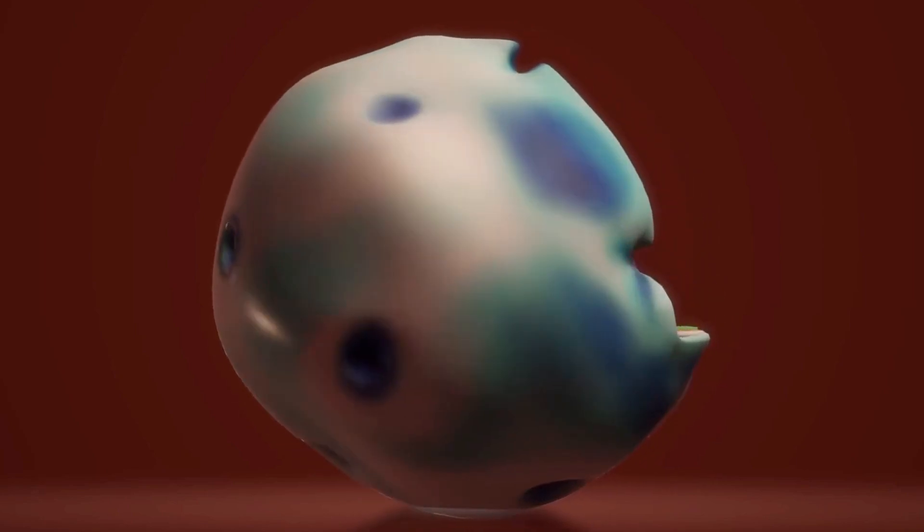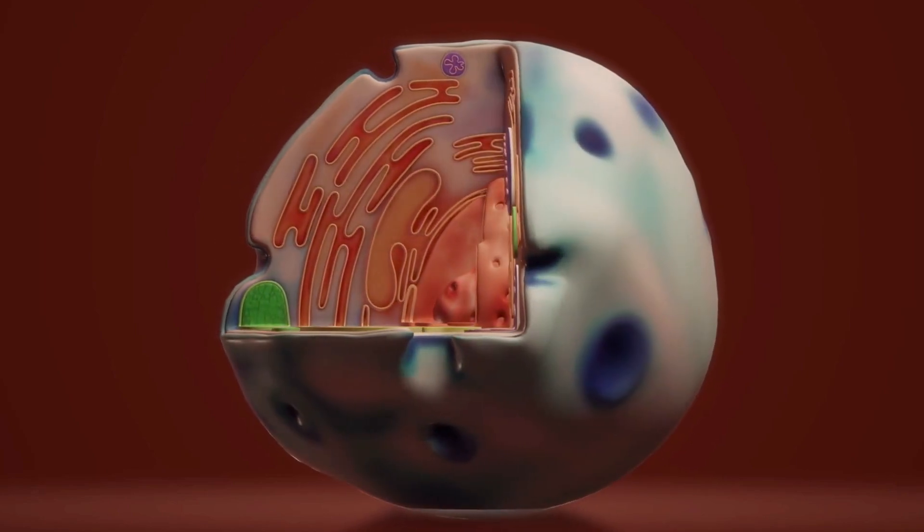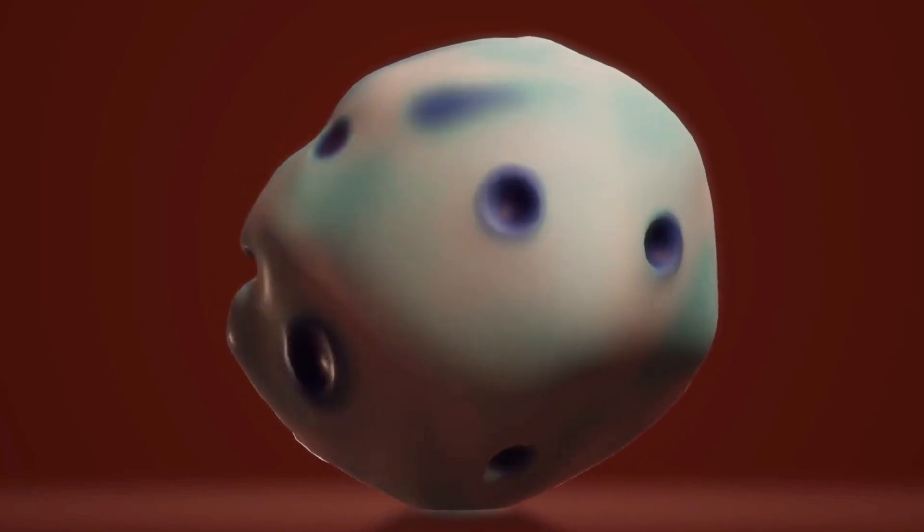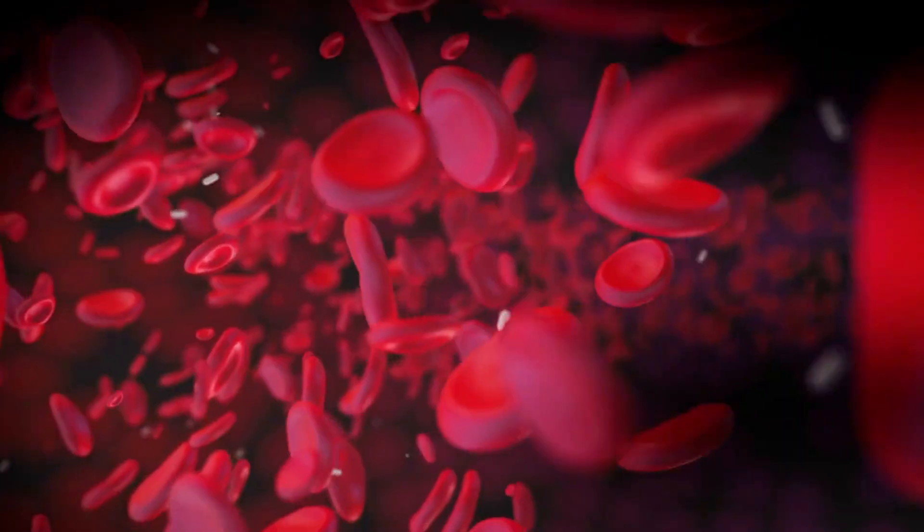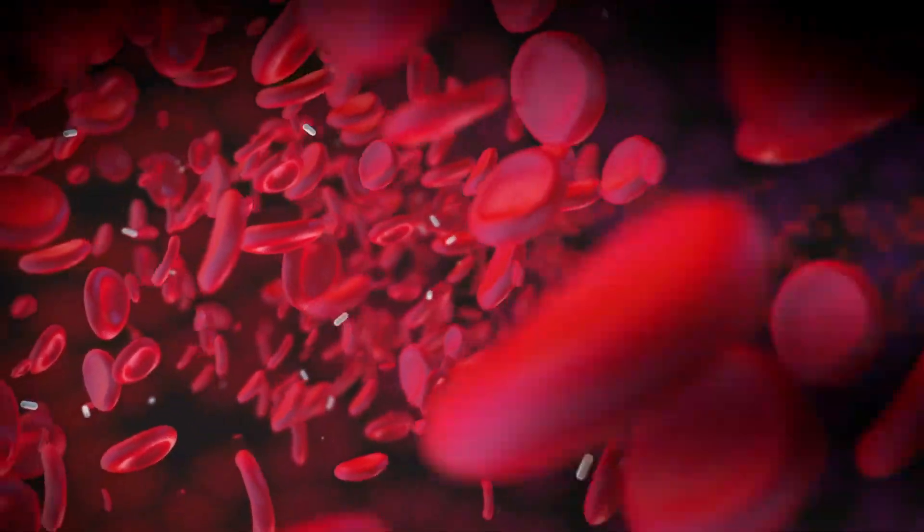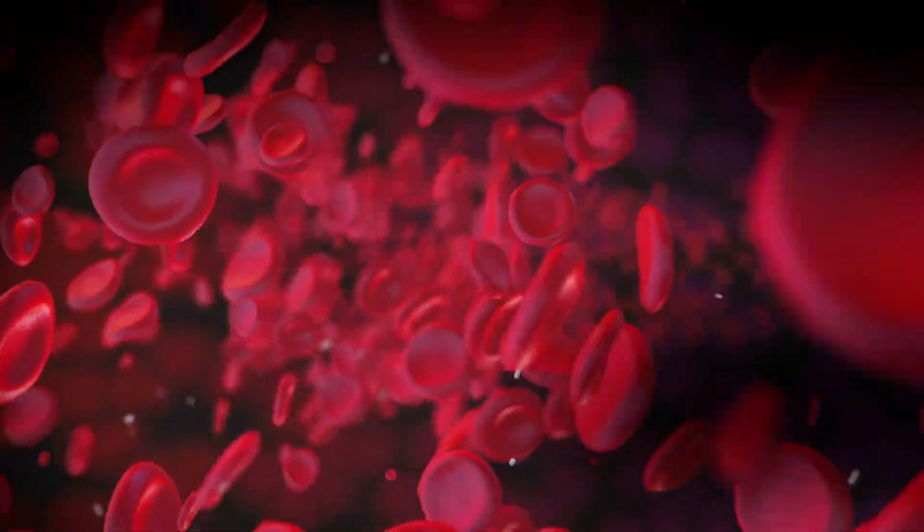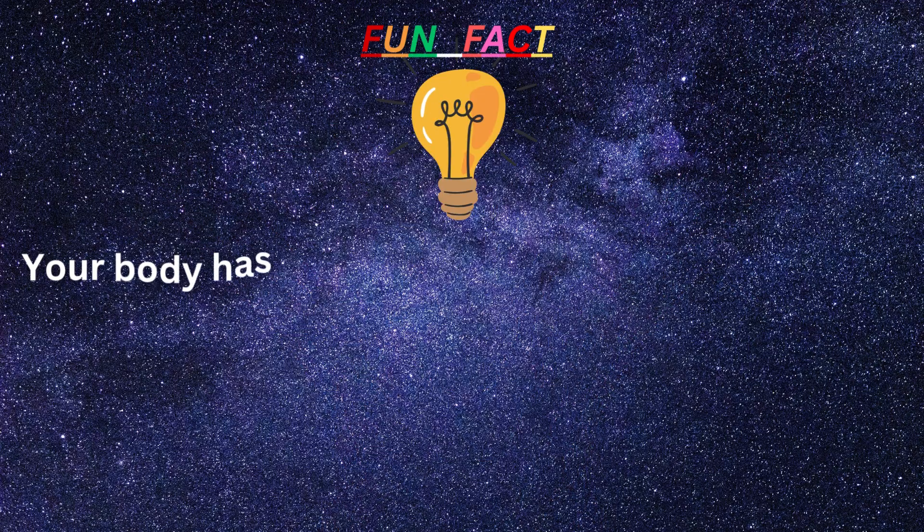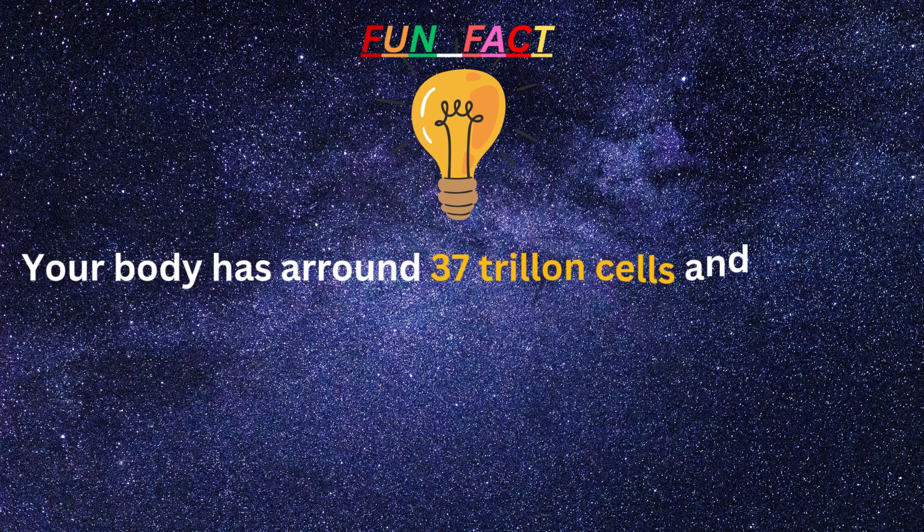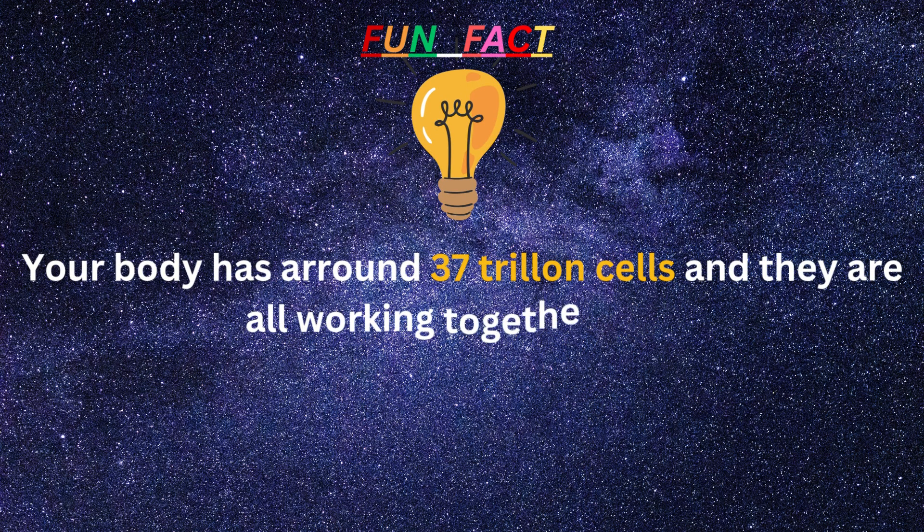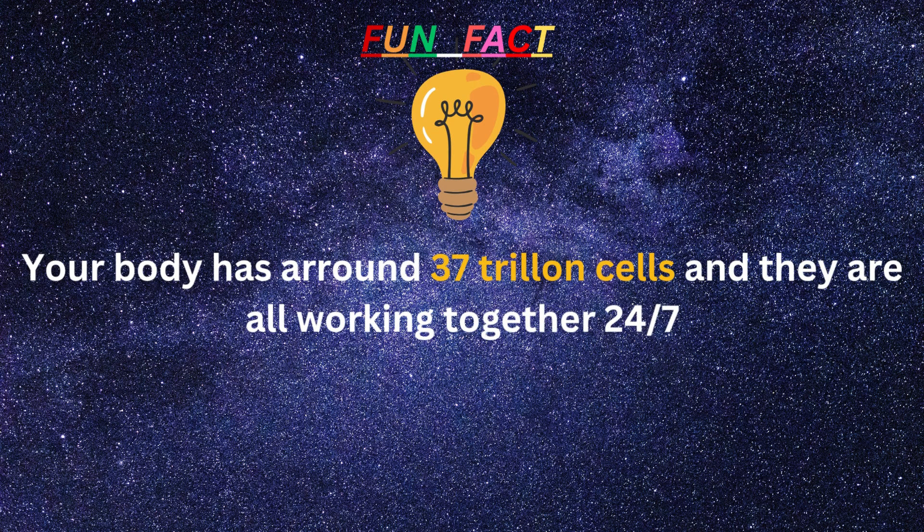So, to sum up, a cell is the smallest unit of life. It has many organelles, each with a special job. And together, they keep us alive and functioning. Today's fun fact: your body has around 37 trillion cells, and they are all working together 24/7. Wow! Amazing!